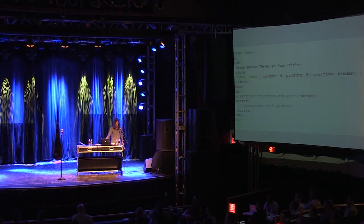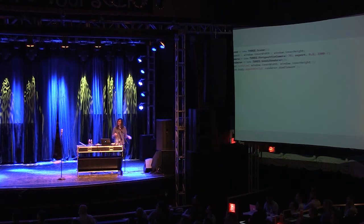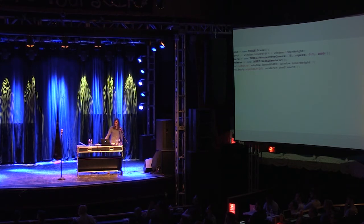Let's look at the code. This is the HTML — you just include the main Three.js file and then your JavaScript goes after that. All Three.js projects have at least these three things: a scene, a camera, and a renderer. You set the size of the camera and the renderer, and you add the canvas element to the HTML.